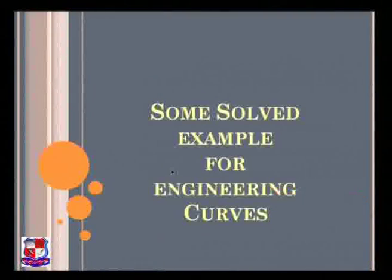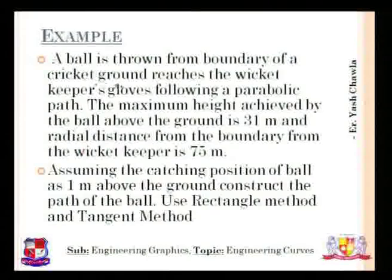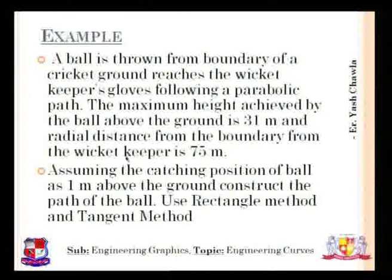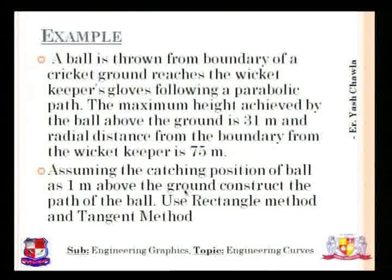We are running short on time so we will solve one example. This is an example of a parabola: a ball is thrown from the boundary of a cricket ground and reaches the wicket keeper's gloves following a parabolic path. The maximum height achieved by the ball above the ground is 31 meters, the radial distance from the boundary to the wicket keeper is 75 mm, and the position of the ball is assumed as 1 meter above the ground. Construct the path of the ball using the rectangle method and tangent method.